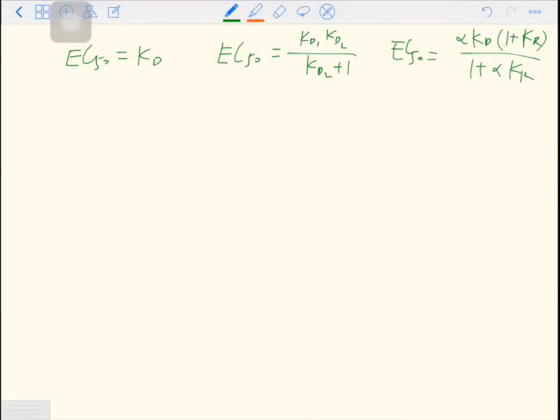In any of these three models, EC50 is independent of the concentration of R. The total number of receptors has nothing to do with EC50. But in the real world, in some experiments, when you change the total number of receptors, EC50 will change as well. And none of the models we have learned so far can explain why the EC50 will change with the total number of receptors.